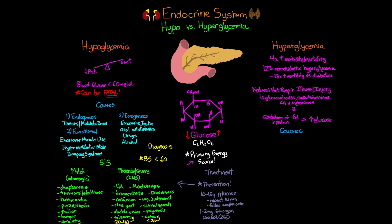Causes of hyperglycemia in hospitalized patients include MIs, strokes, surgery, trauma, pain, and sepsis — anything that triggers the stress response. That stress response causes the release of biological mediators and hormones, and the greater the stress experienced, the more those mediators are released and the higher the glucose level rises.